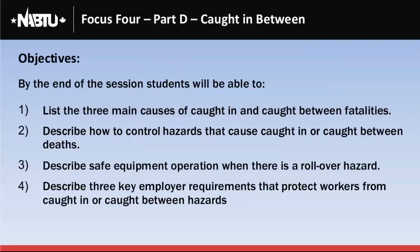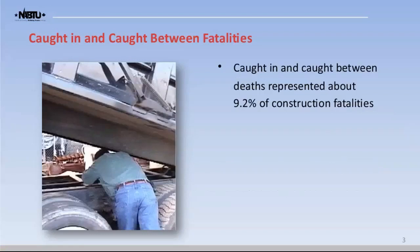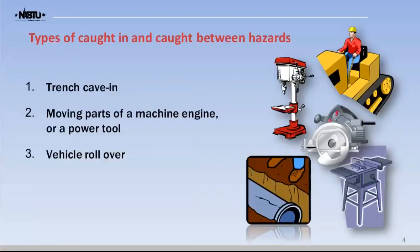The objectives for this session are: list the three main causes of caught in or caught between fatalities; describe how to control hazards that cause caught in or caught between deaths; describe safe equipment operation when there is a rollover hazard; and describe three key employee requirements to protect workers from caught in or caught between hazards. The three main types are trench cave-ins, moving parts of machine engines or power tools, and vehicle rollover.